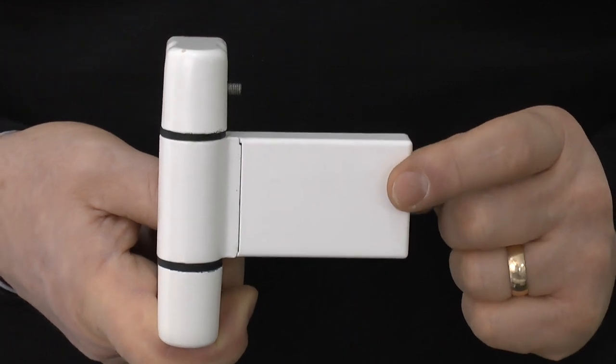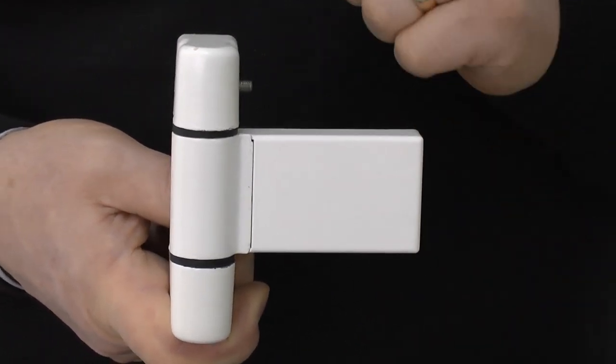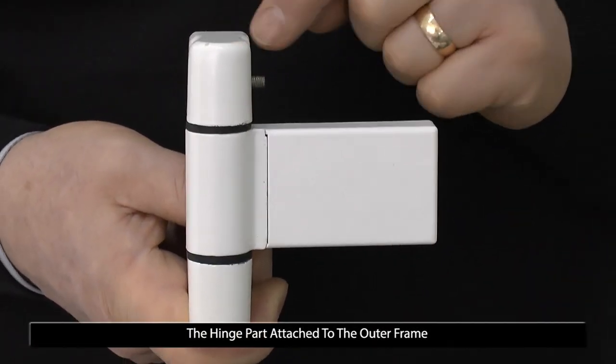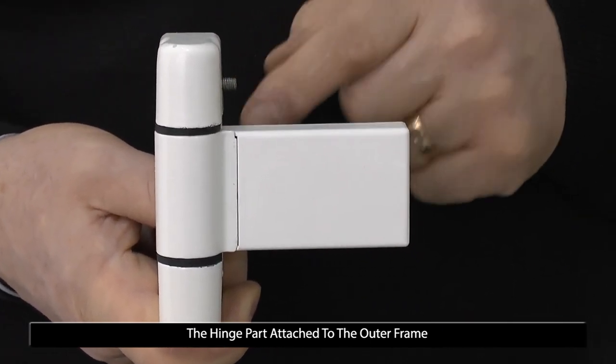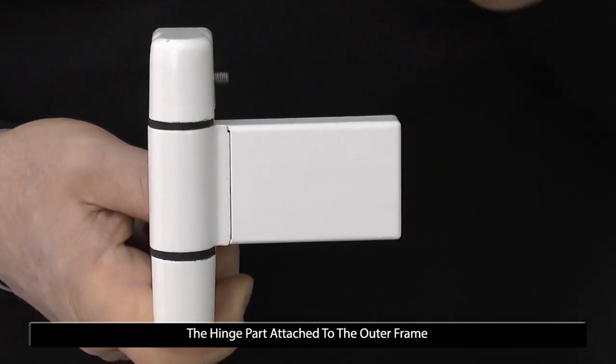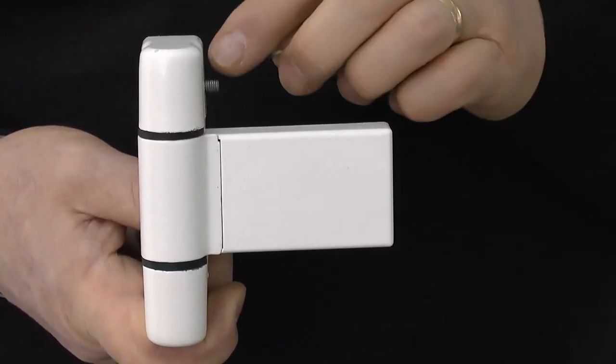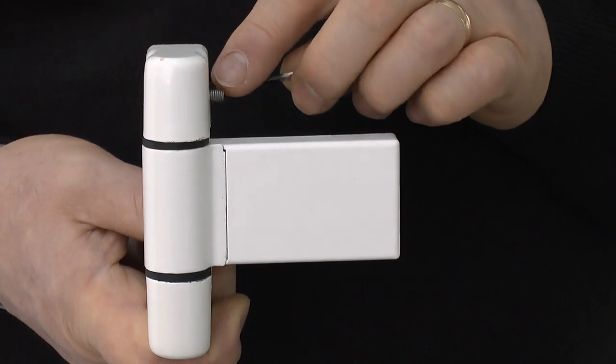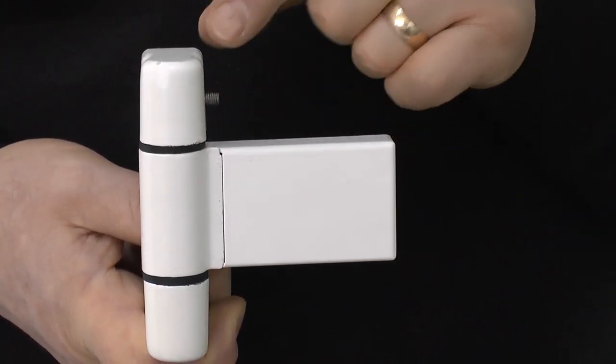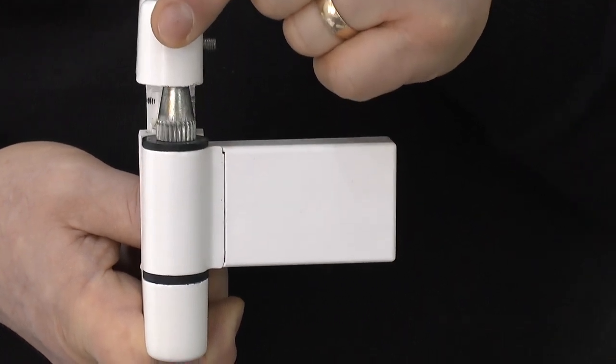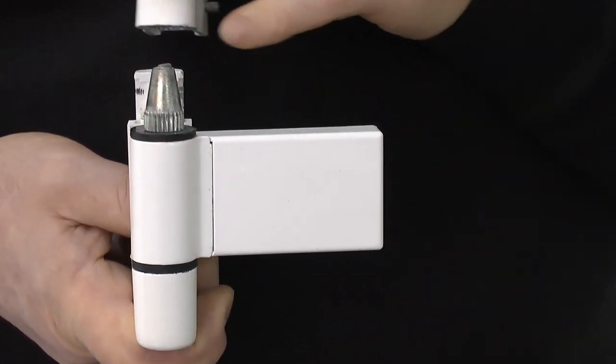When the hinge was originally put onto the door frame, this section is screwed through the back. To access the screws at the back, you need a 2mm allen key to remove this allen screw. Once removed, you should be able to slide that off which will expose the hinge.